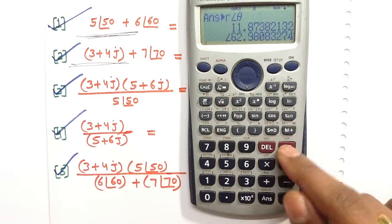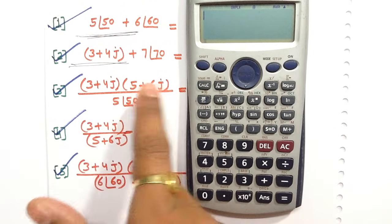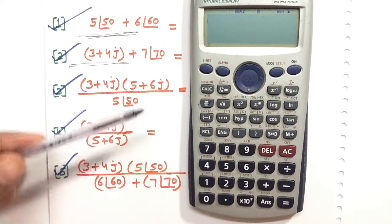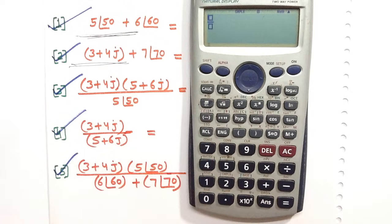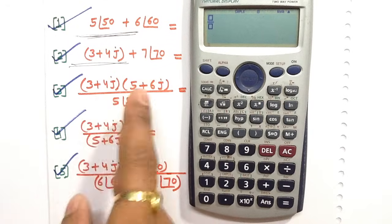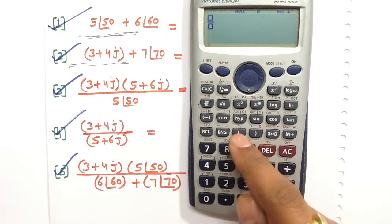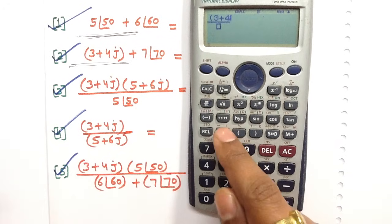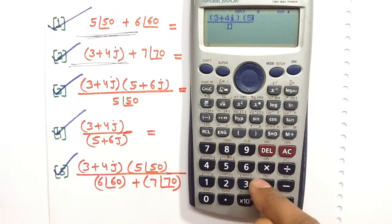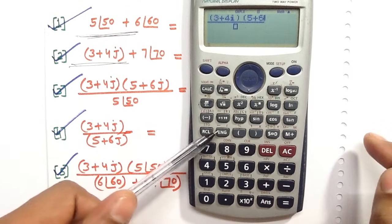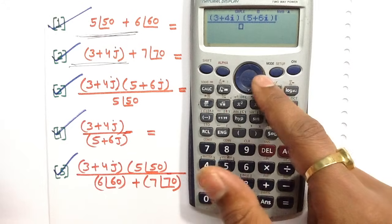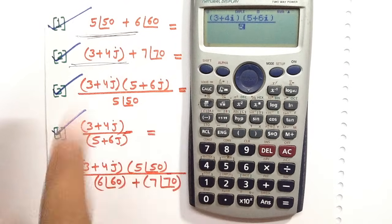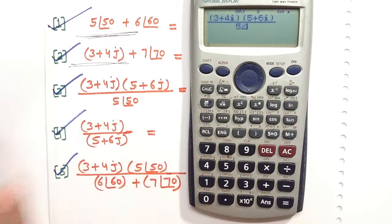Proceeding to question number three. In this question we have to write numerator and denominator values. Press the fraction button so you can write the numerator and denominator simultaneously. Write 3 plus 4j in the numerator — to write j press the designated button. Then in the denominator write 5 plus 6j using the same j button.